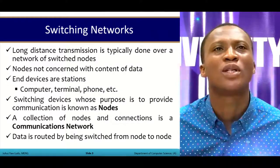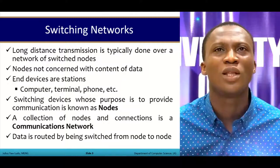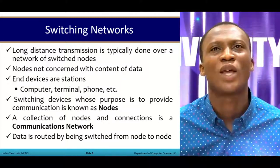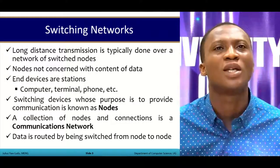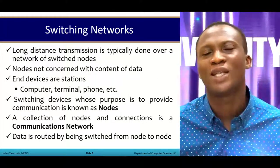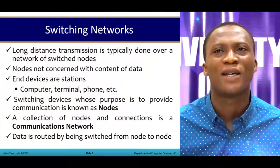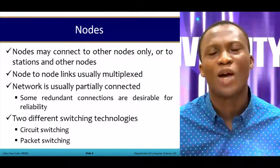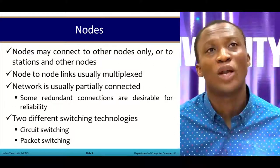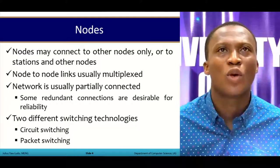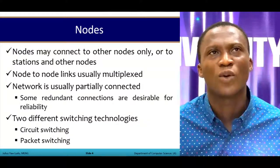Switching devices whose purpose is to provide communication are also known as nodes. We'll be switching between end devices and nodes throughout. A collection of nodes and connections is known as the communication network. Data is routed by being switched from one node to another, or from one end device to another. Nodes may connect to other nodes only, or to stations and other nodes.